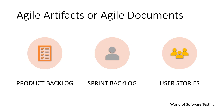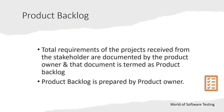Let's understand the first artifact: the product backlog. The product backlog is a visible, ordered list of everything we know we will need to do to deliver the product and what the team will work on next. The product owner is accountable for the content — meaning the requirements and the order of the items in the product backlog.